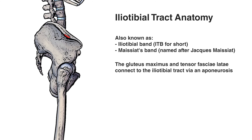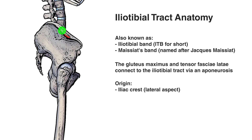Let's take a look at the origin next — you can see that marked out here in red. That's going to be on the iliac crest, which is just the ridge along the top of the hip bone here. Specifically, it's on the lateral aspect of the iliac crest.